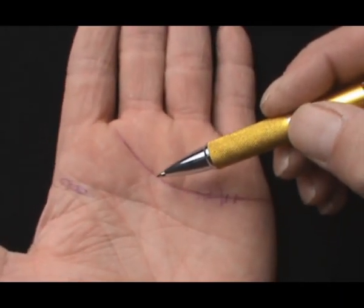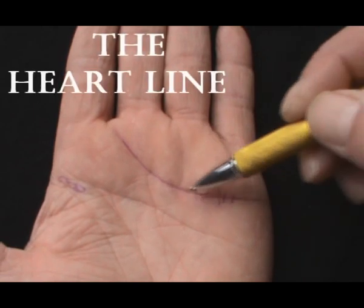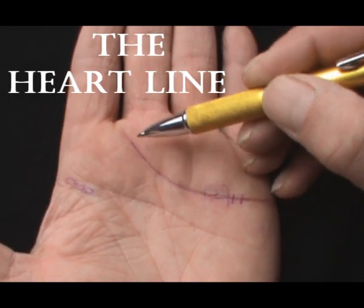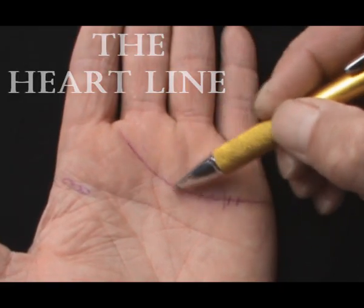In this video we shall have a further look at the heart line. It usually starts from between the base of the index finger and the middle finger and runs across to the percussive edge of the hand.